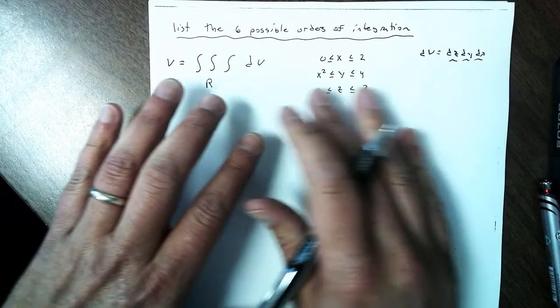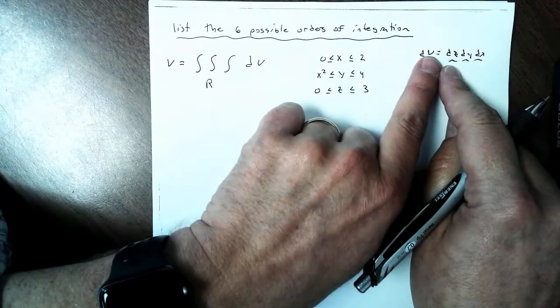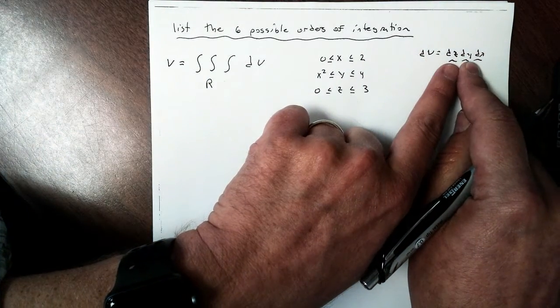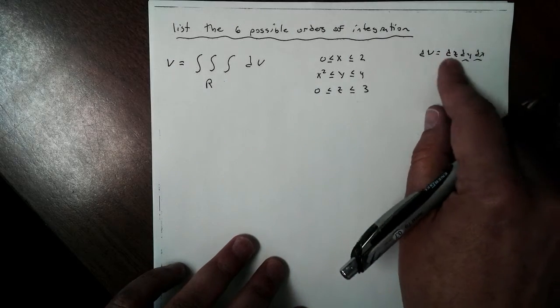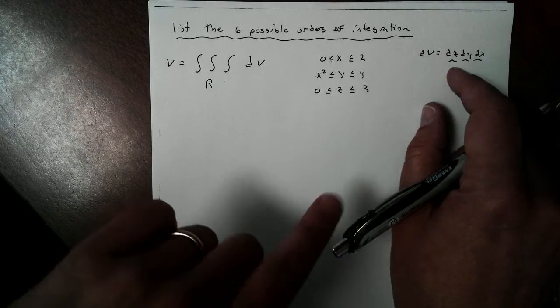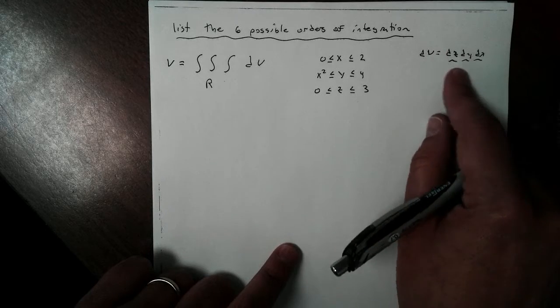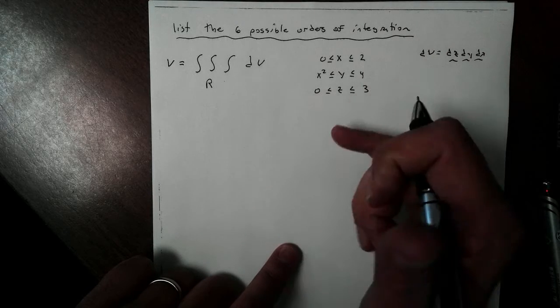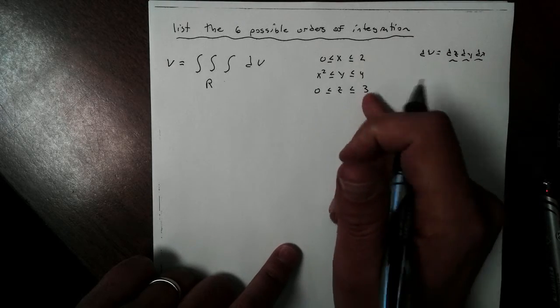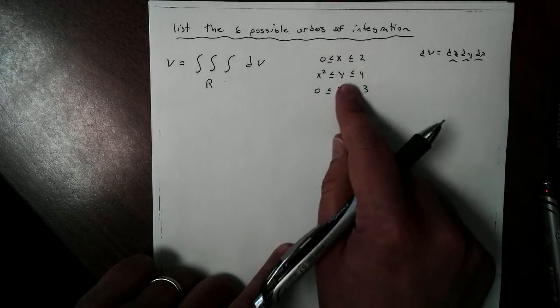So the question is, if I wanted to write this as an integral, of course, we have to do our change in Z first, change in Y, and then change in X. But what would happen if we were to change the order? Well, remember, from when we did double integrals, when you change the order, you kind of change the way we have to set up our integral and our limits, or our domains here.